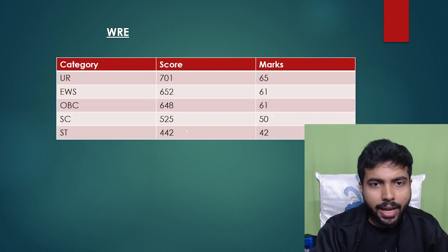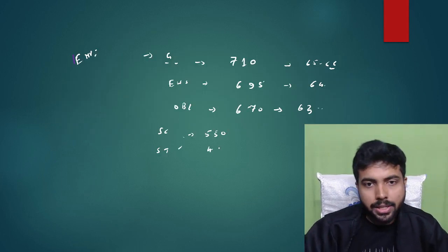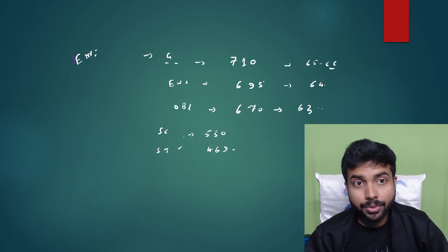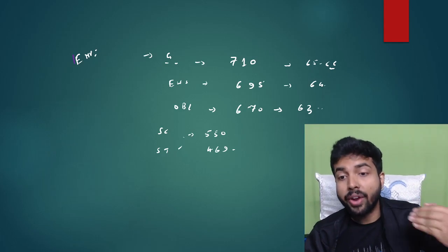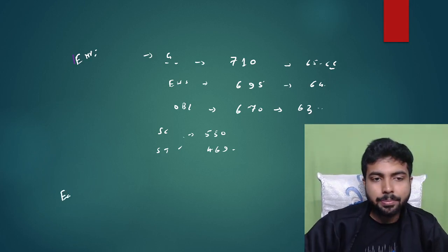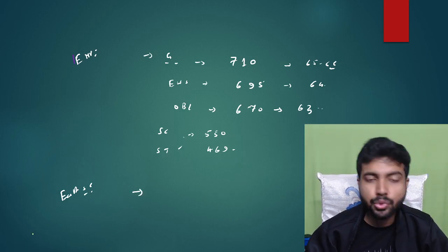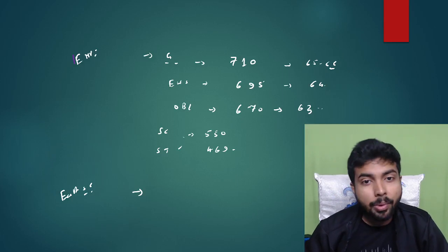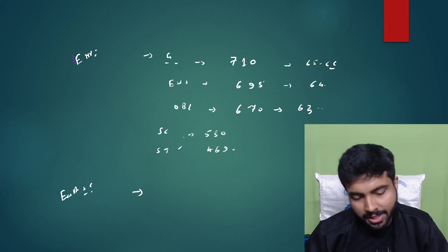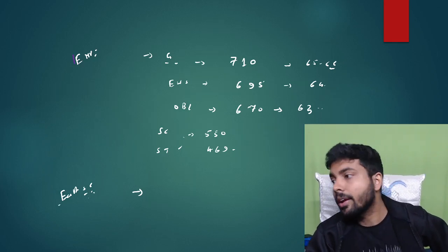For Environmental Engineering, SC category cutoff is around 550 and ST category cutoff is only 469 marks, which is quite low as expected. Earth Science is also a very important branch. Its cutoff has increased this year because awareness about this branch has grown, thanks to YouTube and content creators. Earlier the Earth Science cutoff was very low, making it a perfect branch for those aiming for non-core placements.